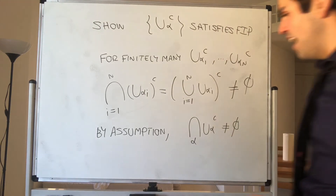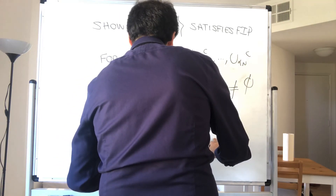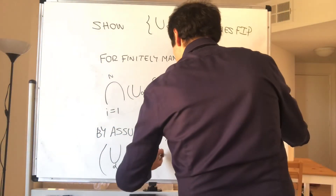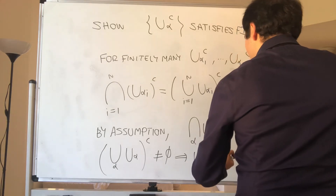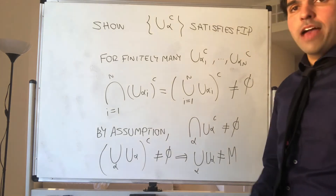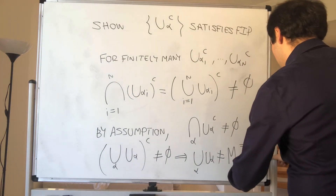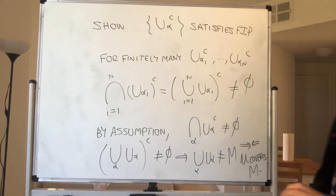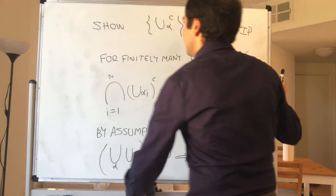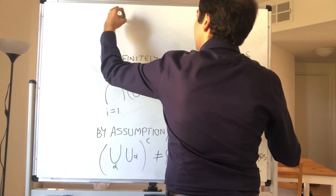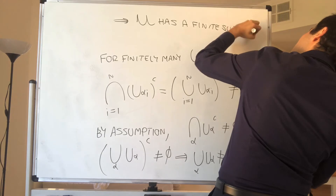The intersection of the U-alpha complements is non-empty — but then that's a problem. In particular, the intersection of all U-alpha complements — which equals the complement of the union of U-alphas — is non-empty. But since this is non-empty, the union of U-alpha cannot be all of M. Because if it were all of M, the complement would be empty — a contradiction. But this contradicts the fact that U covers M. So we get a contradiction with the assumption that U has no finite subcover. Therefore U has a finite subcover, and since U was arbitrary, M is compact.